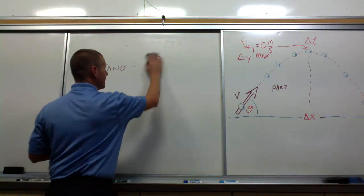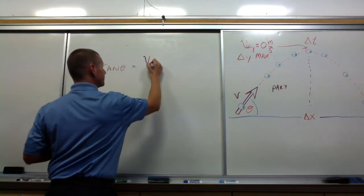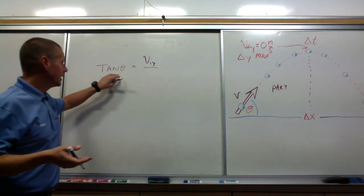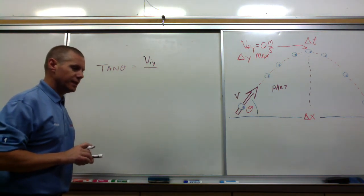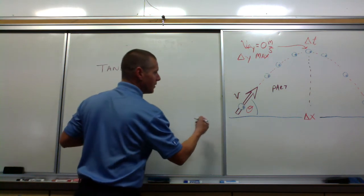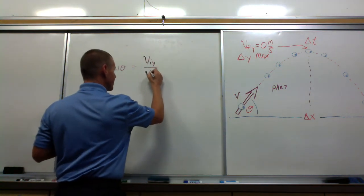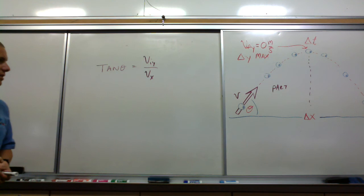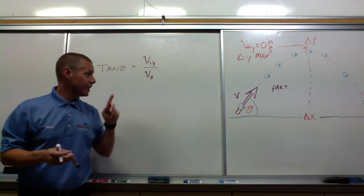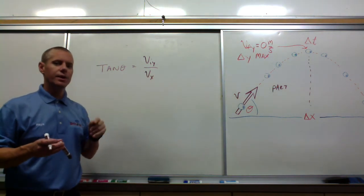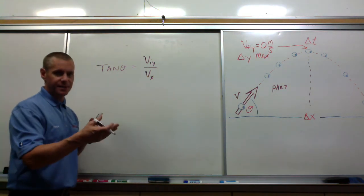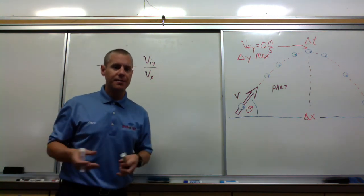The vertical leg is the initial vertical velocity — the velocity in the y direction that has to deal with gravity, the one that controls how long it's in the air. Divided by the horizontal direction, that's the velocity in the x direction. Nothing is changing in the x direction because there's no gravity in that direction and we are neglecting wind resistance. So we call that v sub x — it's the same at the beginning and end of the problem, it's not changing.